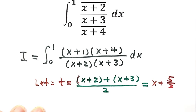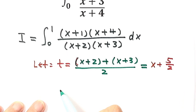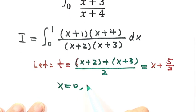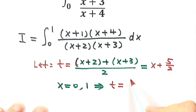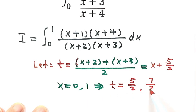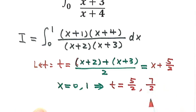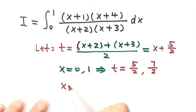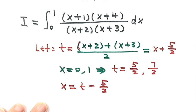Now let's find the lower and upper bounds for t. The bounds for x are 0 and 1. Plugging in x = 0 gives the lower bound t = 5/2. Plugging in x = 1 gives the upper bound t = 7/2. From t = x + 5/2, solving for x gives x = t - 5/2.